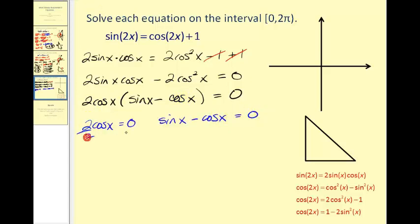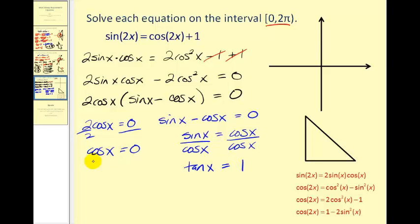Dividing by two we have cosine x equals zero. Now over here what I'm going to do is move the cosine x to the other side. And now I'm going to divide both sides by cosine x. Remember sine x over cosine x is tan x. And of course cosine x divided by cosine x is one. So we need to find the angles on this interval where cosine x equals zero and tan x equals one.